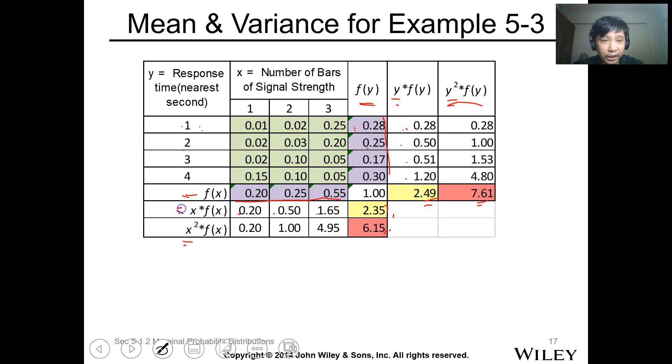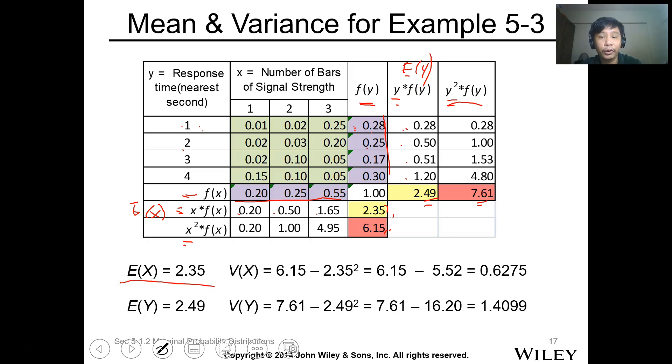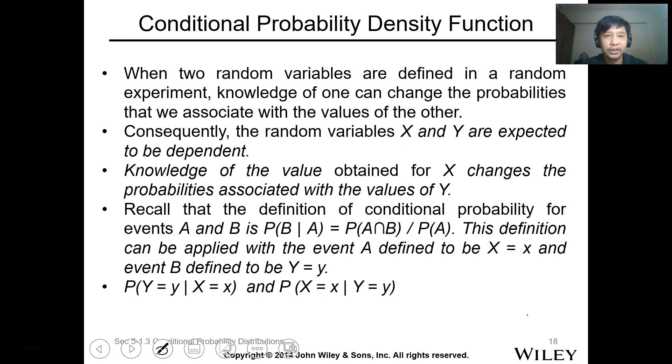We can determine the mean and variance. For the mean with respect to x, this is E(x). This is E(y). E(x) is 2.325 - just get the sum of this. For E(y), get the sum of this function, which is 2.49. For the variance, we have the values multiplied by squared. Sum those, then square this and subtract the value. That will be 0.6275 for variance of x. Variance of y is 1.409. To get standard deviation, just take the square root of variance.